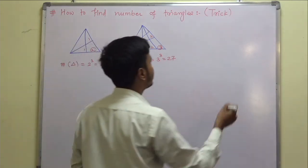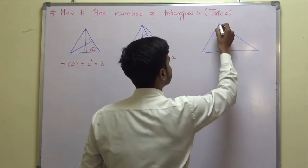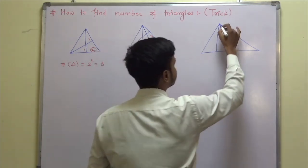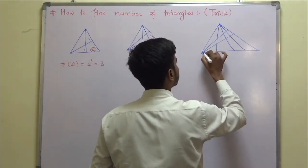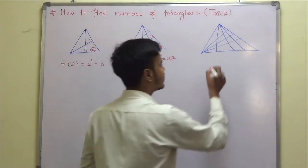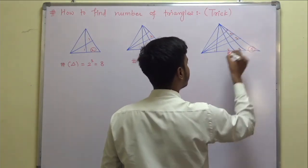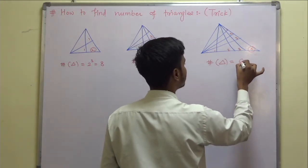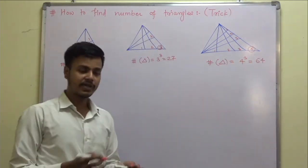Now let us take another triangle. Suppose we have a triangle where you count 1, 2, 3, 4 on one side and 1, 2, 3, 4 on the other. How many number of triangles are there? You can already tell me: number of triangles equals 4 cubed, and 4 cubed is 64. In this way you can find out.